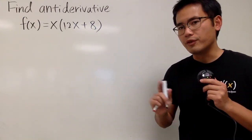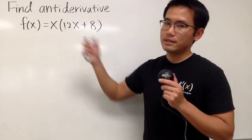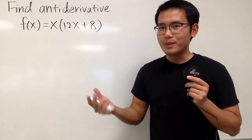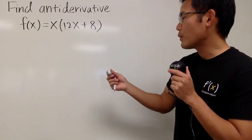Do not use the reverse power rule right away, because x times the 12x, the exponent is going to be affecting each other, right? So, this is what we actually have to do.